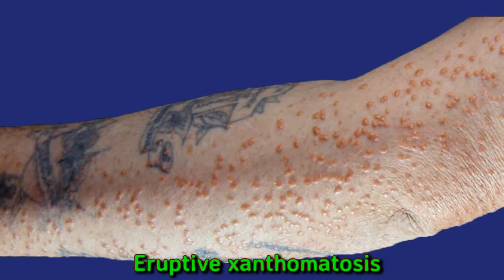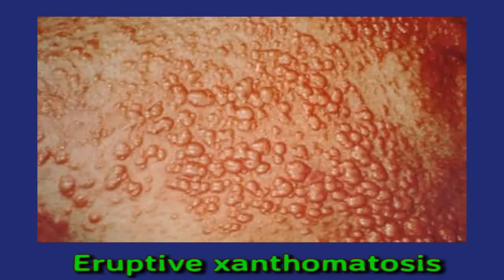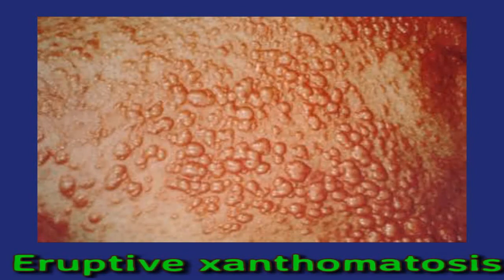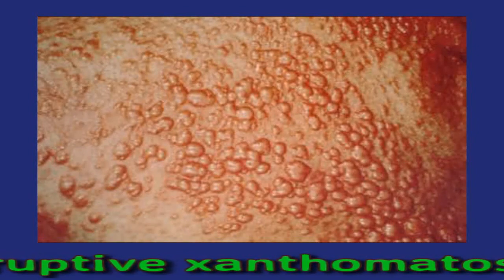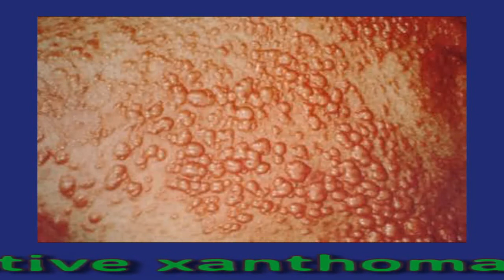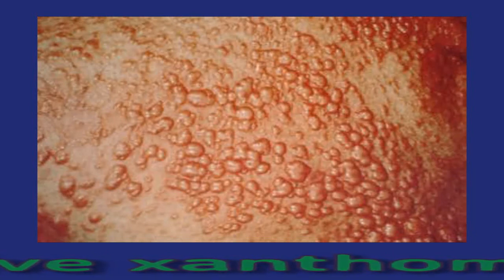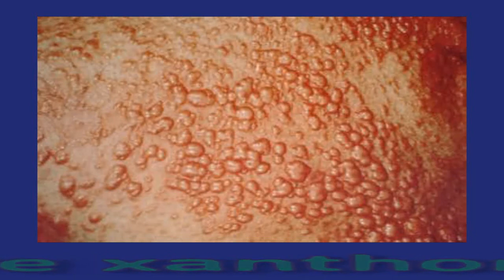The spots often occur on the legs, feet, hands, arms, and buttocks. Every bump will have a red ring around it and might itch.